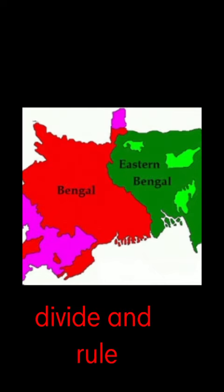Good morning students. In this video I am going to tell you about the partition of Bengal. The British always followed the policy of divide and rule. In 1905, they partitioned the state of Bengal on religious lines. The British said that this partition would make administration easy.